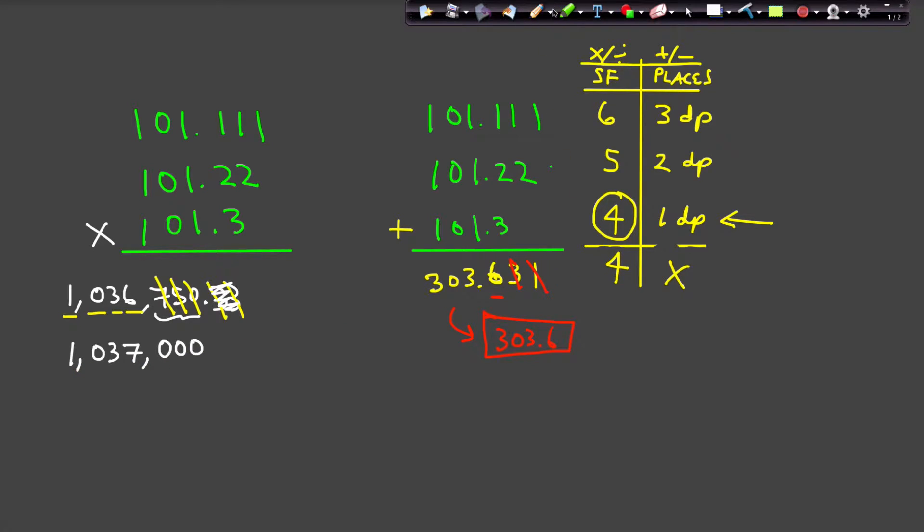Does that meet our requirement that the answer have four sig figs? Let's check it out. Box. Do you see a dot? No. So this is the end of your answer. So you can see the number 1,037,000, indeed has four sig figs.